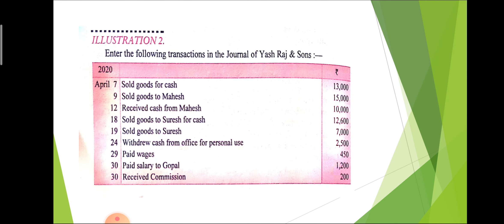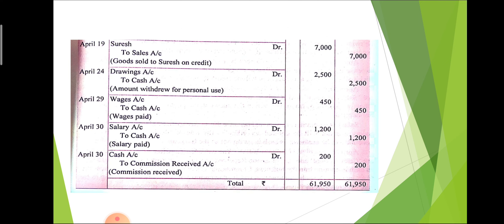The last entry: received commission. Commission is an income, and we credit all incomes. When income is received, it increases our cash, meaning cash comes into the business, so cash is debited and commission is credited. The journal entry is: cash account debit to commission account. With the help of these two examples, you can solve your textbook questions, and we will further discuss this chapter in the next video.